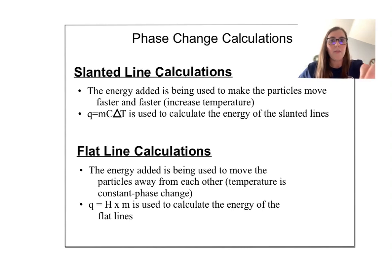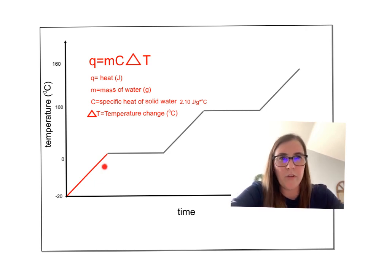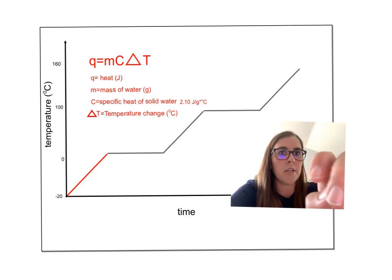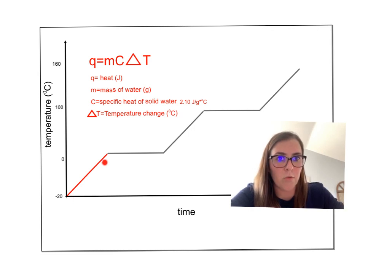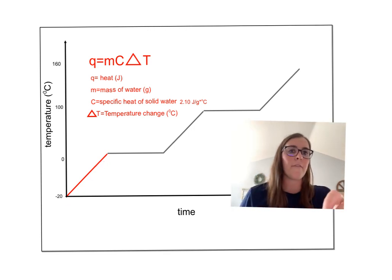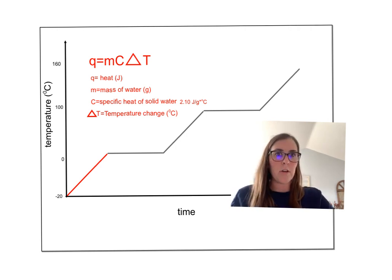We talked about Q equals mcΔT. That's the equation we're going to use for the slanted lines when we're making the particles move faster, increasing their temperature. For the flat lines, that's a phase change, so we're going to use H times M with the appropriate H value to figure out the energy needed for that phase change. For this first line of heating up when we're heating up a solid, we're going to use Q equals m times C times delta T. Q is the heat in joules, M is the mass in grams, C is the specific heat of solid water, and delta T is the temperature change for that line segment. You are going to write this on the inside of the flap.